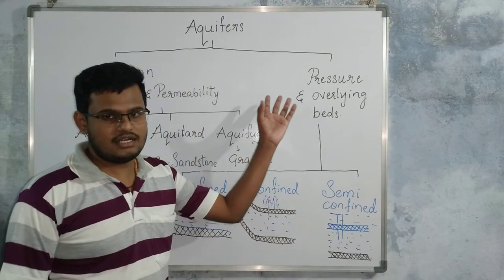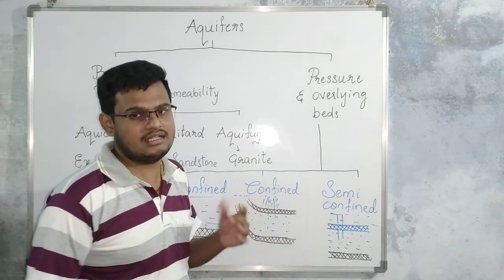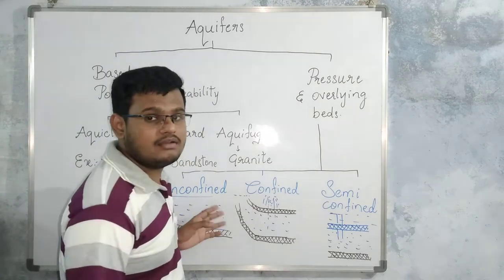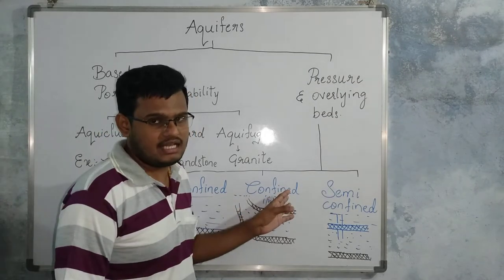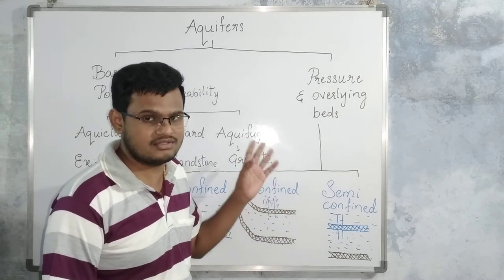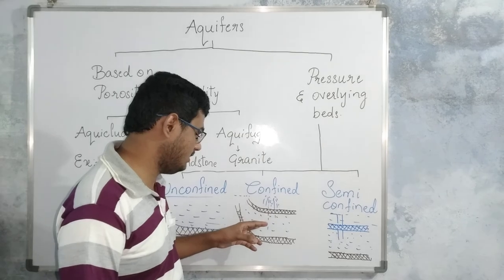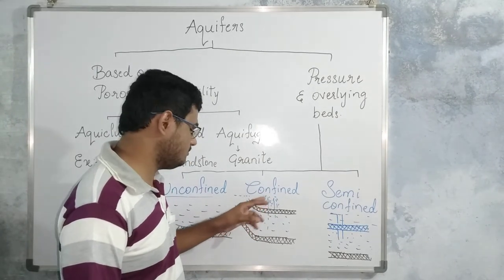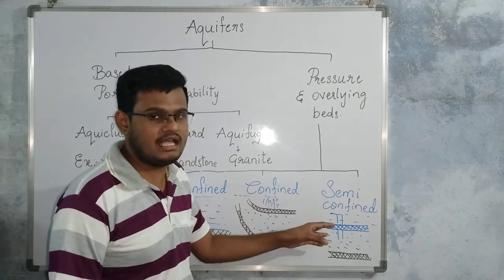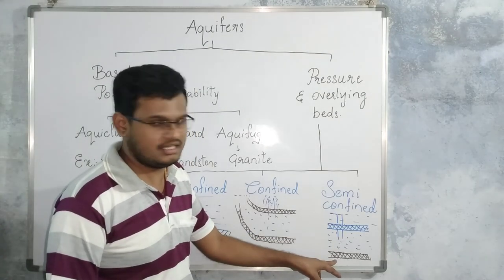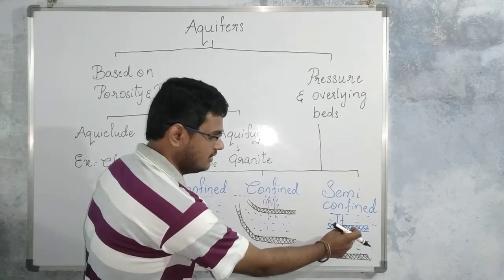Based on pressure and overlying beds, aquifers are of three types: unconfined, confined, and semi-confined. In unconfined aquifers, water exists under atmospheric pressure, and drilling a bore well shows the water table of that area. In confined aquifers, water moves under pressure greater than atmospheric pressure, sandwiched between two aquicludes; drilling a bore well causes water to explode outside — those wells are called artesian wells. In semi-confined aquifers, an aquitard replaces the aquiclude on the upper side, with aquiclude on the lower side and the aquifer in between; drilling a bore well yields water from the aquifer and above the aquitard.